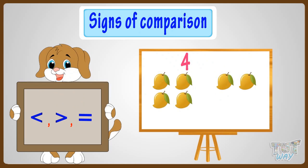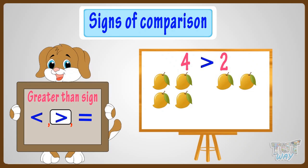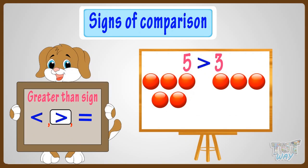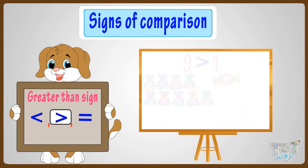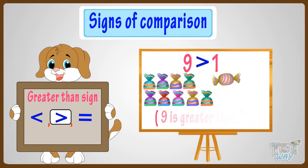When a number is bigger than the other number, we use the greater than sign like this. Four is greater than two. Five is greater than three. Nine is greater than one.